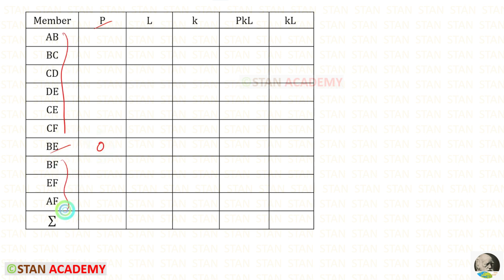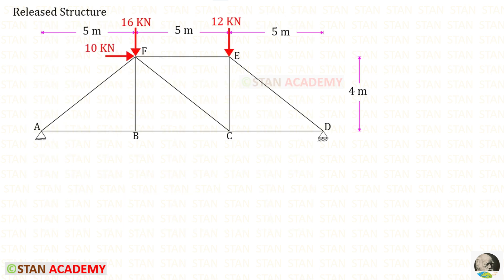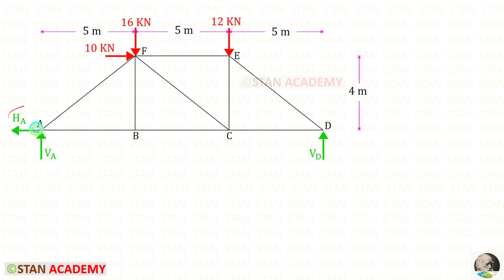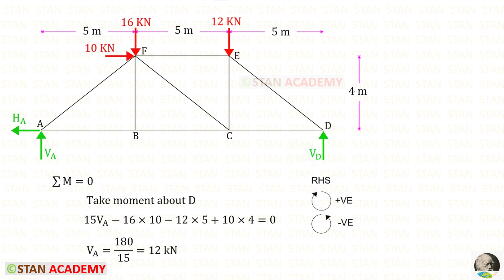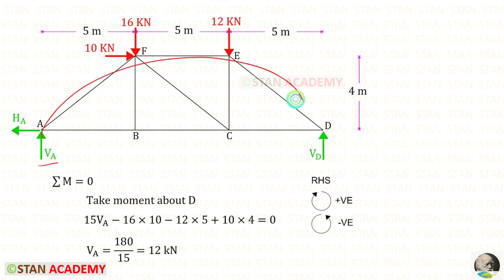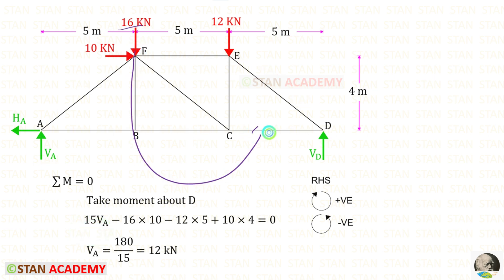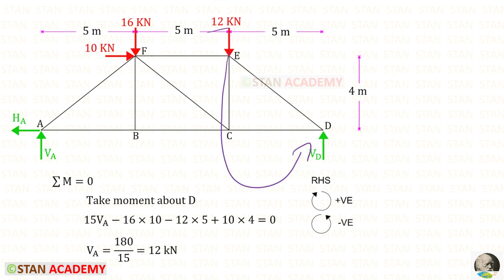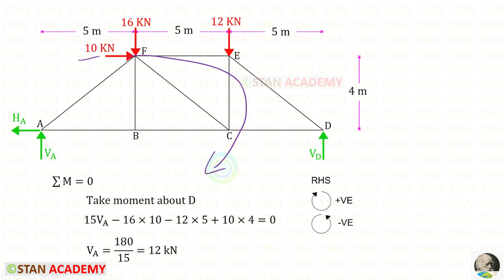The rest of them we need to find now. Before finding the member forces, we have to find the reactions. At A, we need to find 2 reactions, and at D, we need to find one reaction. To find VA, I am going to take moment about D. In this case, we have to follow the right hand side rule — clockwise will be positive and anticlockwise will be negative. VA is acting in the clockwise direction, so it will be positive, and the distance is 5+5+5, so it will be 15VA. This load is acting in the anticlockwise direction, so it will be negative and the distance is 10. This load is also acting in the anticlockwise direction, so it is also negative and the distance is 5. This horizontal load is acting in the clockwise direction, so it will be positive and the distance is 4. For VA, we will get 12 kN.